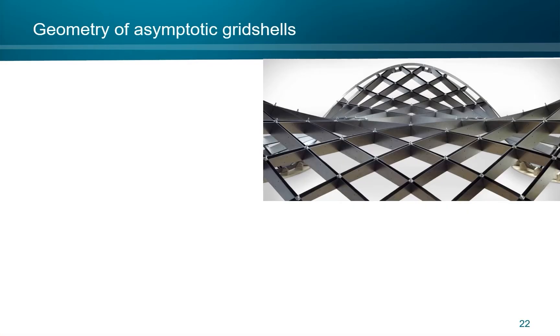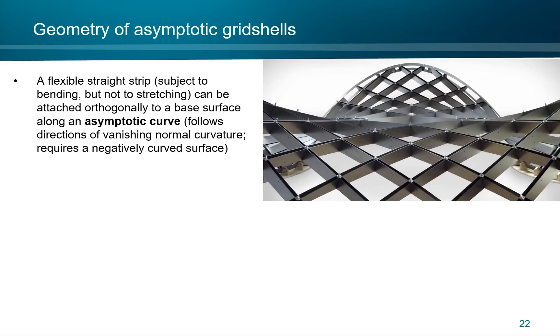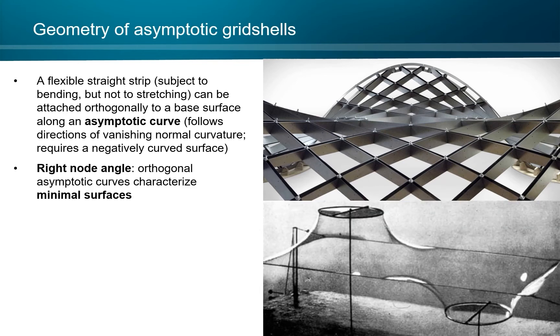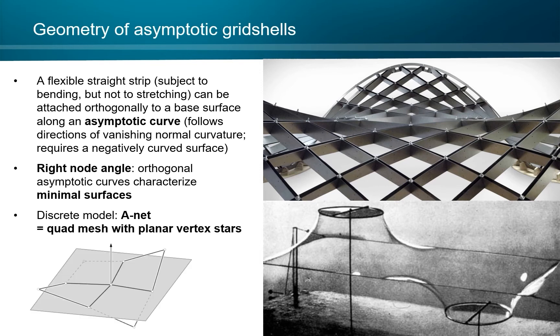Let us look at the geometry. Differential geometry tells us that the flexible straight strip, which is just subject to bending, but not to stretching, can be attached orthogonally to a base surface only along an asymptotic curve. Such a curve follows directions of vanishing normal curvature, which requires a negatively curved surface. If we have right angles, we have orthogonal asymptotic curves, which characterizes minimal surfaces.